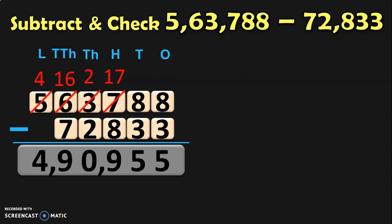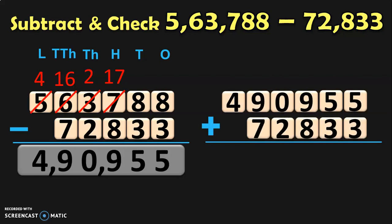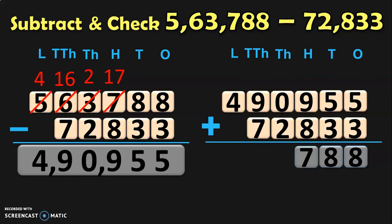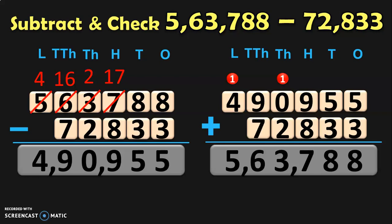Now the next step is to verify the answer. You add the difference with the smaller number, which is 72,833. Write down the place values and begin the addition from the ones place. 5 plus 3 is 8. In the 10s place, 5 plus 3 is 8. In the 100s place, 9 plus 8 is 17, so 7 is retained and 1 is carried over to the 1000s place. 1 plus 0 plus 2 in the 1000s place gives you 3. In the 10 thousands place, 9 plus 7 is 16, so retain 6 and carry 1 to the lakhs place. 1 plus 4 in the lakhs place gives you 5. The answer is 5,63,788, which is the bigger number from which you began the subtraction. So your subtraction is correct and we have verified the same through addition.